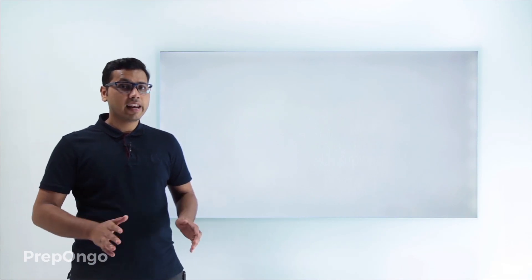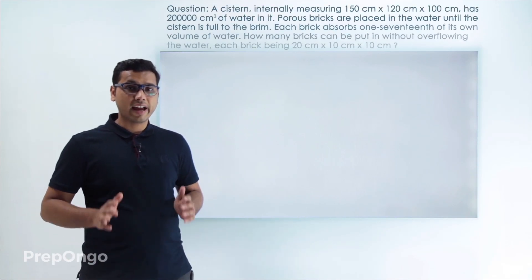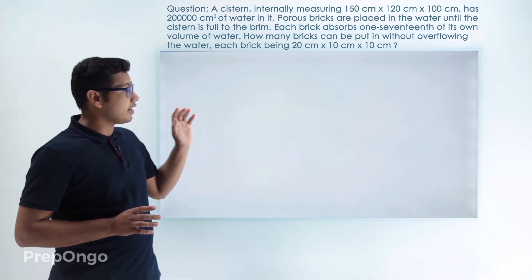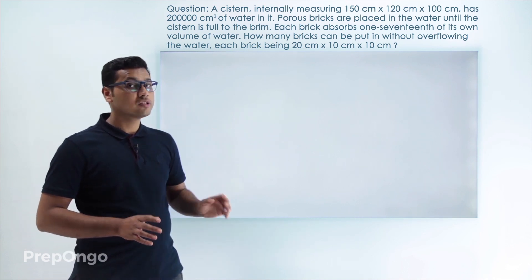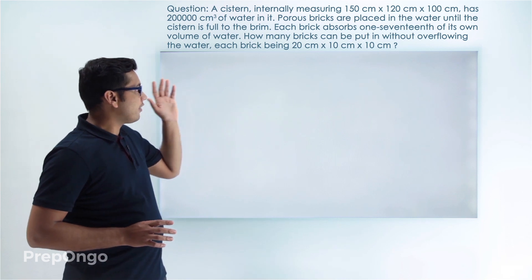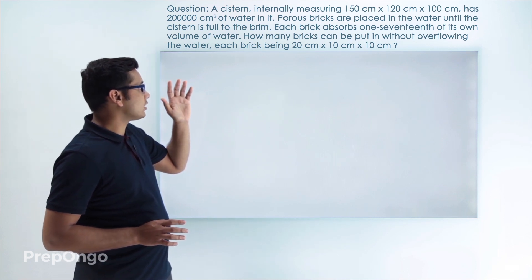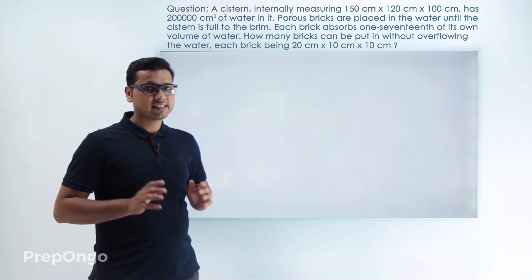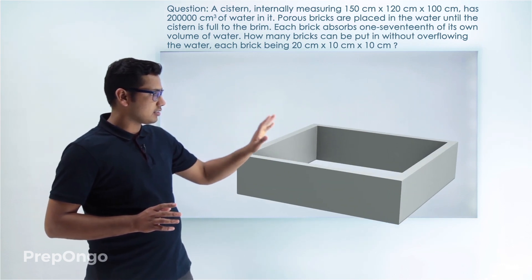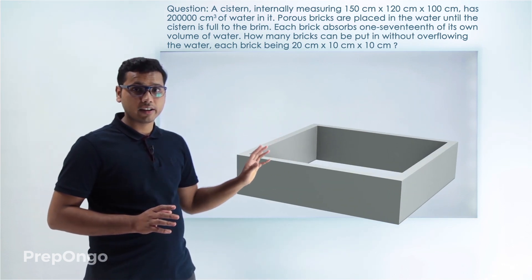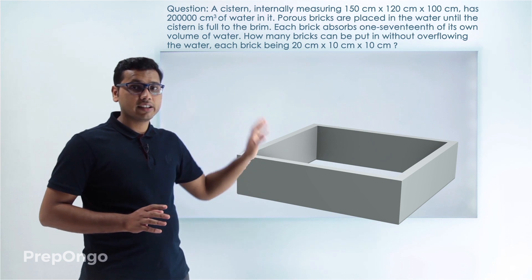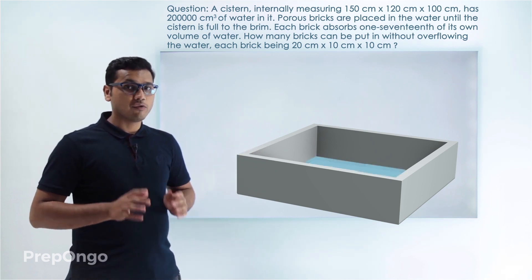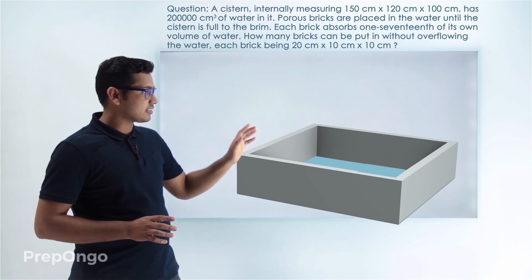Hello everyone! Let's have a look at a question which says that there is a cistern or an underground tank whose dimensions are 150 × 120 × 100 centimeters. So here is the cistern or the underground tank — it is cuboidal in shape and there is some water filled in this tank.